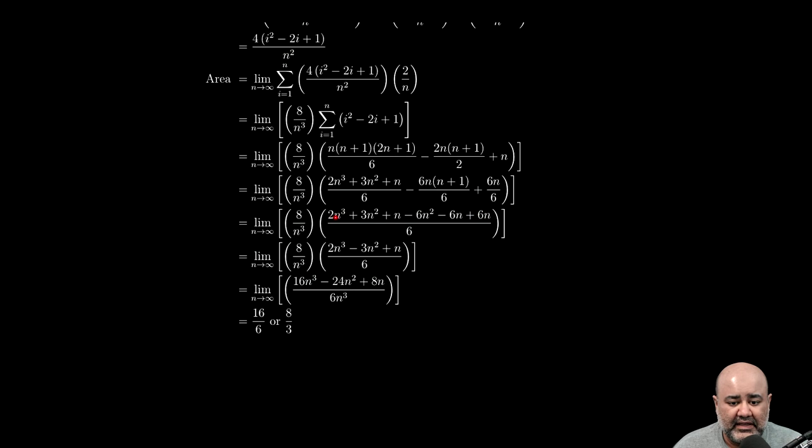At this stage, we can combine like terms. That 2n cubed doesn't have a compatriot so that just comes along. 3n squared minus 6n squared will be negative 3n squared. The negative 6n plus 6n will cancel out, leaving behind just n. So that goes there. So we're left with this. We can distribute the 8 in here and the 6 into the n cubed. And if we do, we get something very familiar. We have 16n cubed minus 24n squared plus 8n over 6n cubed.